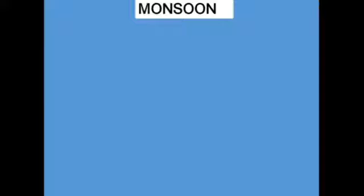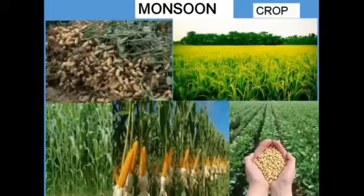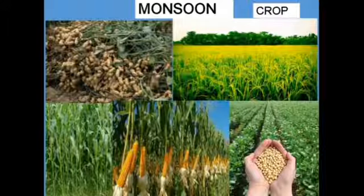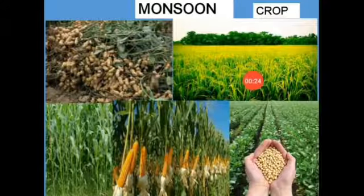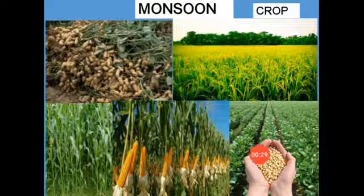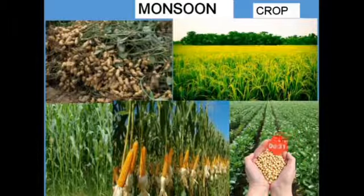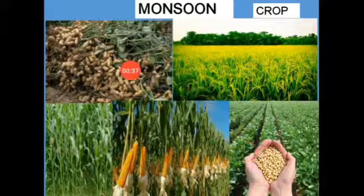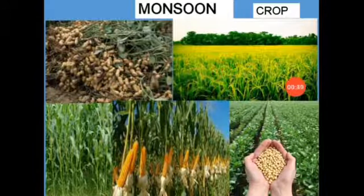Monsoon is famous for its heavy rainfall all over India. The crops cultivated during the monsoon include groundnut, peri, maize, and pulses like moong and some other types of pulses.